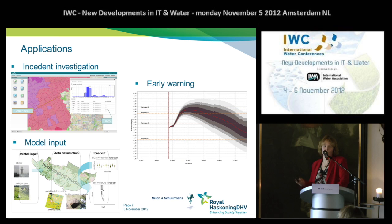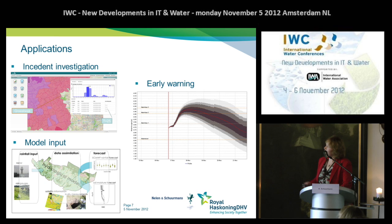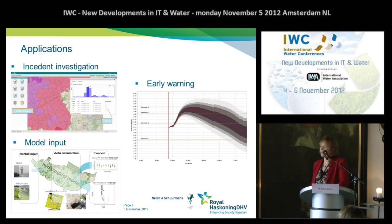What are the applications of rainfall radar, or rainfall in general? First of all, especially municipalities want to know how often certain events occur — so the return period. On the other hand, water boards are interested in early warning systems about the heights of water levels. And hydrological models are used for drinking water companies, for example. Those need spatial information about rainfall as well.